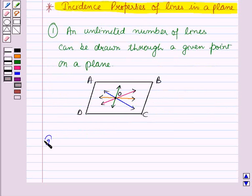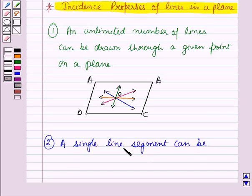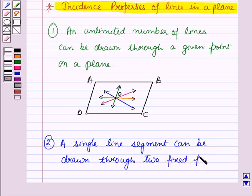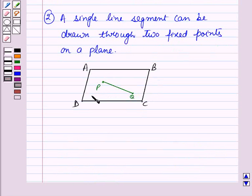The second property is, a single line segment can be drawn through two fixed points on a plane. Now let us take a plane ABCD. There are two fixed points, P and Q here. And only line segment PQ can be drawn. No other line segment can be drawn through these two points in this plane.